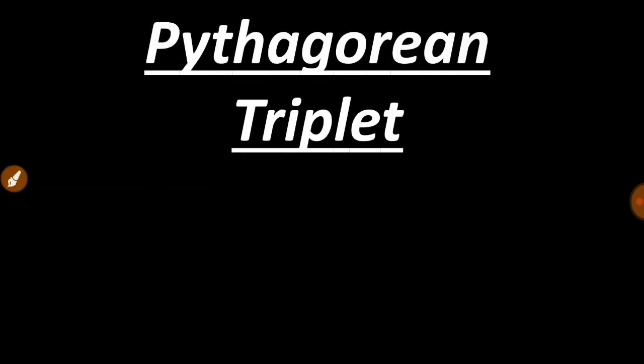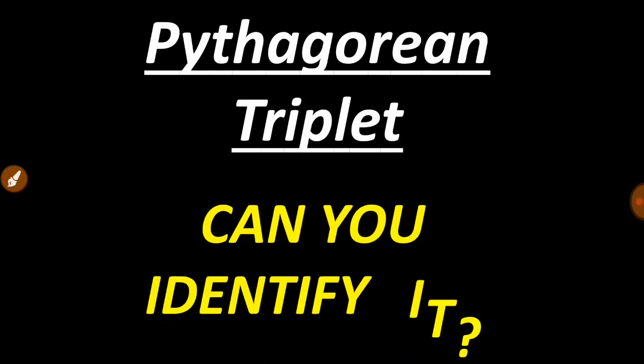Hello guys and welcome back. Have you heard about Pythagorean triplet? It's a group of three sides which are able to form a right-angled triangle. Today we are going to figure out how to identify them, so let's begin.